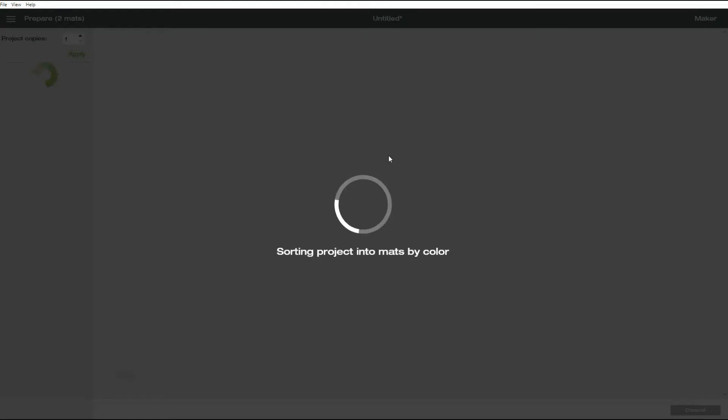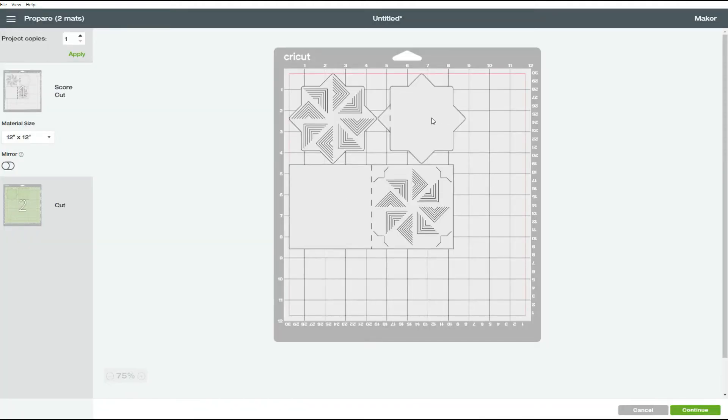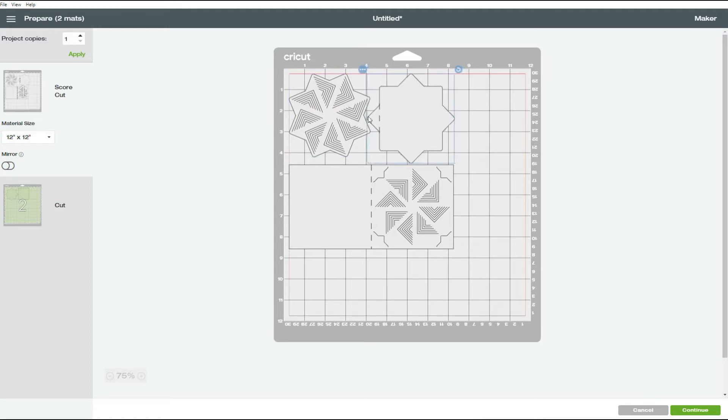Next, click on make it and you can cut both cards from a single eight and a half by 11 sheet of card stock. But what you need to do is just to save some paper. Click on the rotate icon right here and drag that top shape to the top left corner. And then put the card base and drag it to the left. That way you will be able to cut both cards from a single eight and a half by 11 inches sheet of card stock.